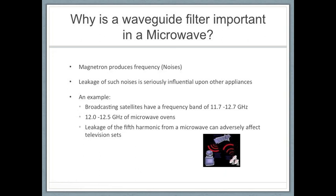A magnetron used in a microwave oven produces frequency components heard as noises other than the fundamental component. Although their levels are extremely low, leakage of such noises from a microwave oven is seriously influential upon other electronic appliances, and therefore various measures are taken in designing a microwave oven. Conventional microwave ovens are provided with a filter within the waveguide to eliminate noises, but such a filter arrangement is effective only against noises relatively close to the fundamental wave and is not intended to eliminate higher harmonic components.